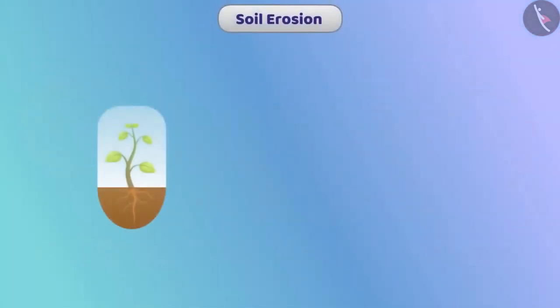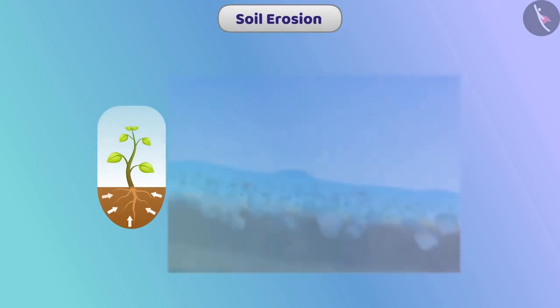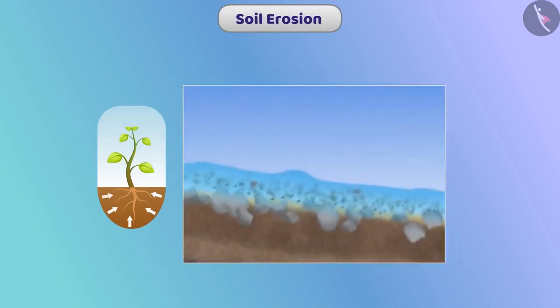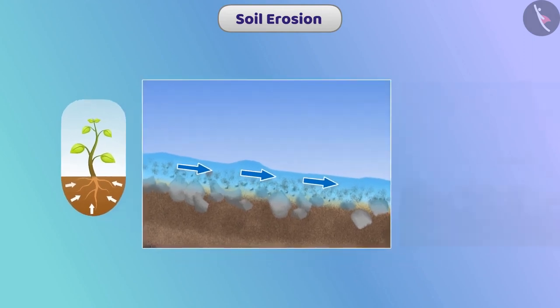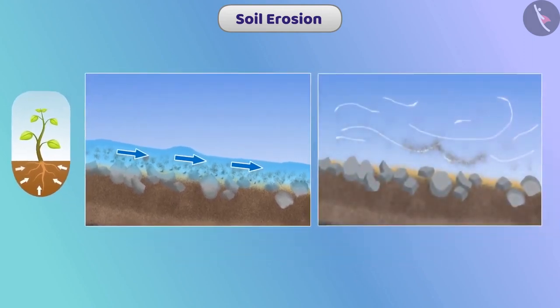Trees hold the soil. Due to the absence of trees, the fertile layer gets washed away with rainwater and blows away with the wind. This is what we call soil erosion.